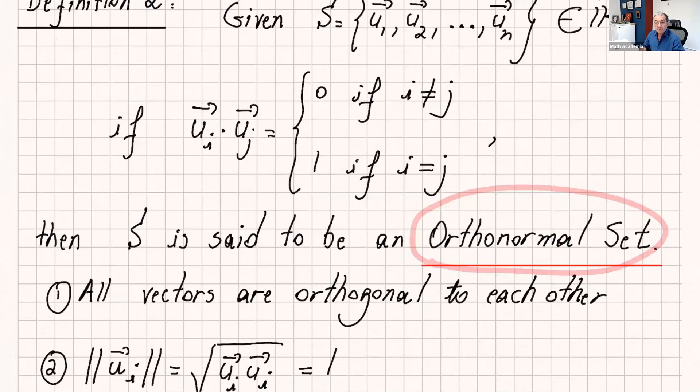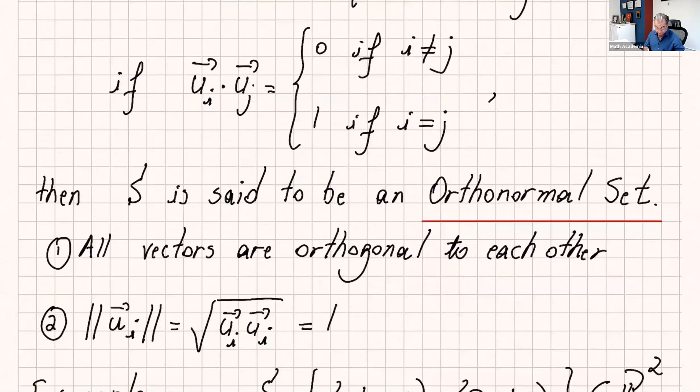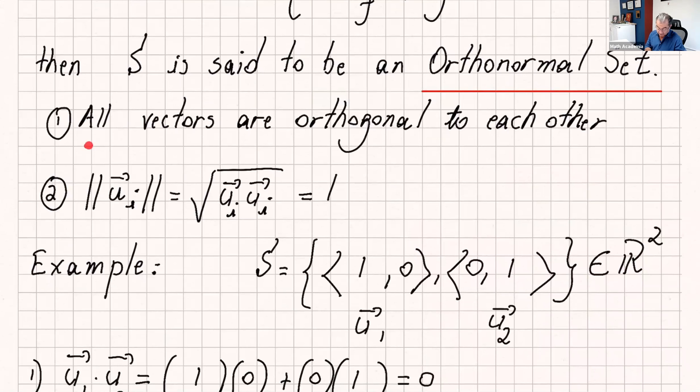What is orthonormal? Every single vector in the set are orthogonal to each other and the norm or the magnitude of every single vector is one. This should remind you like a standard basis. Now all the vectors are orthogonal to each other and if you find the norm of each vector, which is square root of u dot u, then you get one.